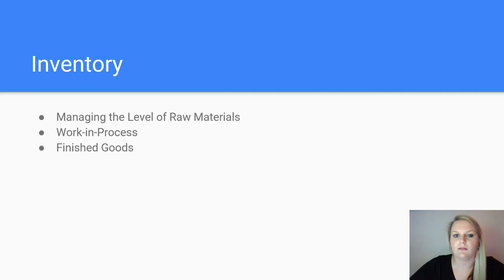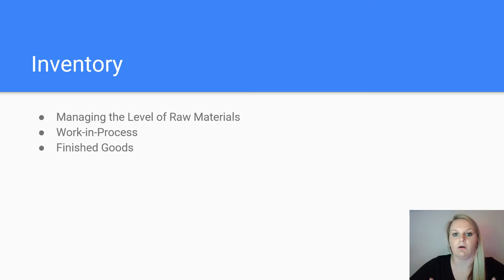Inventory decisions involve managing raw materials, work in process, and finished goods. Inventory for Southwest looks a little different because their inventory consists of purchasing airplane tickets rather than physical goods. The more plane tickets they sell, the better they perform. With the integration of AirTran, they are able to sell more tickets because they can fly to more places, which has increased their inventory since the integration.